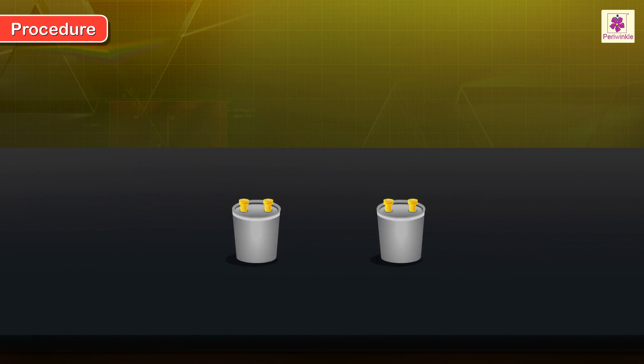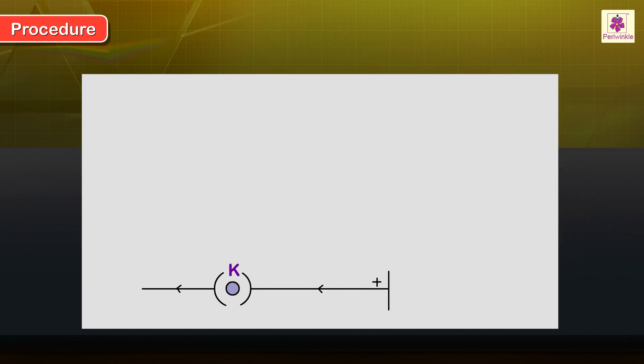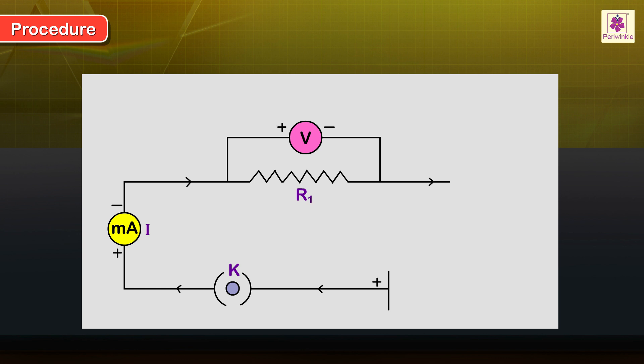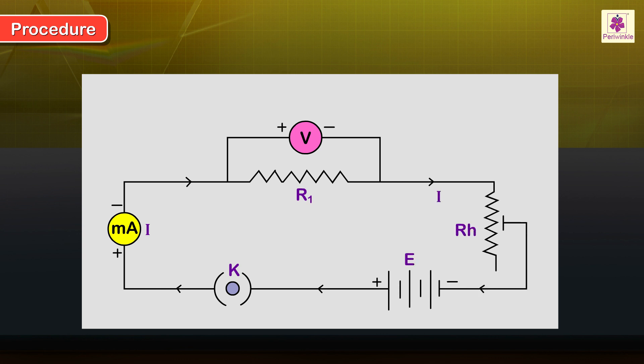Procedure: Label the given resistors as R1 and R2. Draw a circuit diagram showing R1 in series with a rheostat, a DC milliamp meter, a plug key, a battery eliminator, and a DC voltmeter connected across R1.